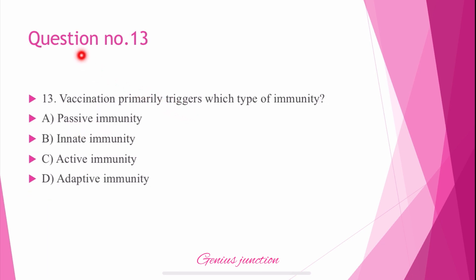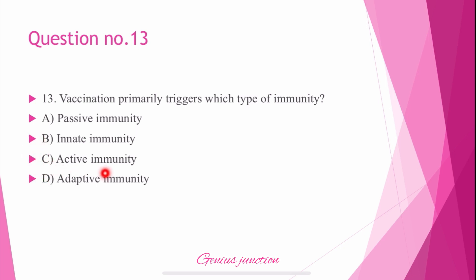Question number 13: Vaccination primarily triggers which type of immunity? Options are: passive, innate, active, or adaptive immunity. The right answer is C — active immunity.